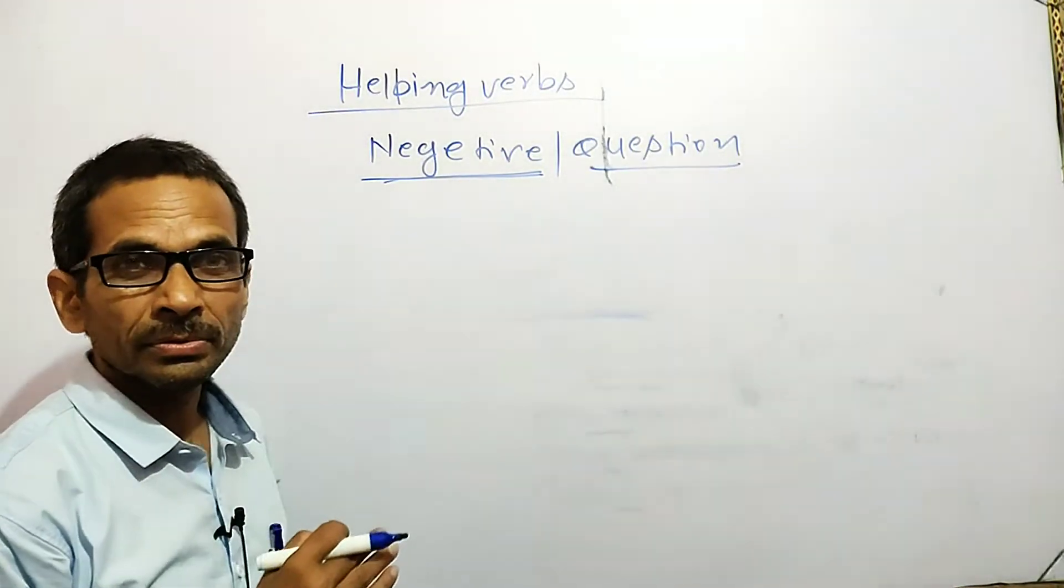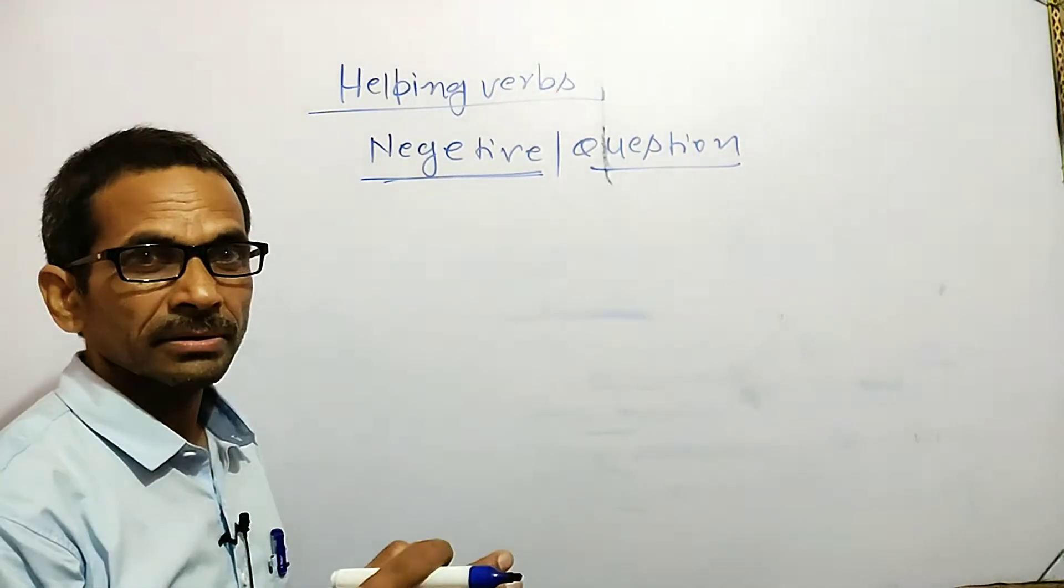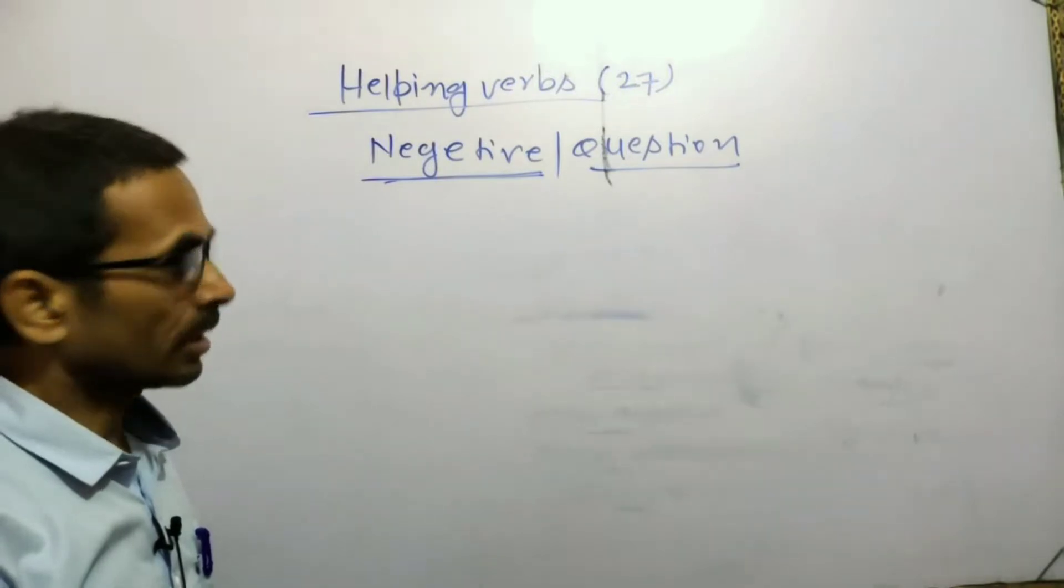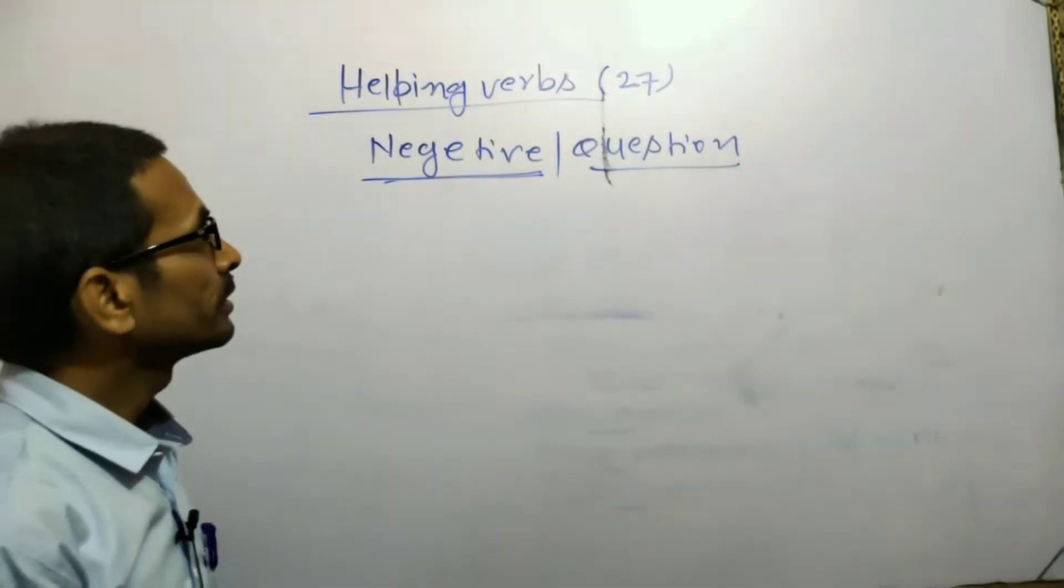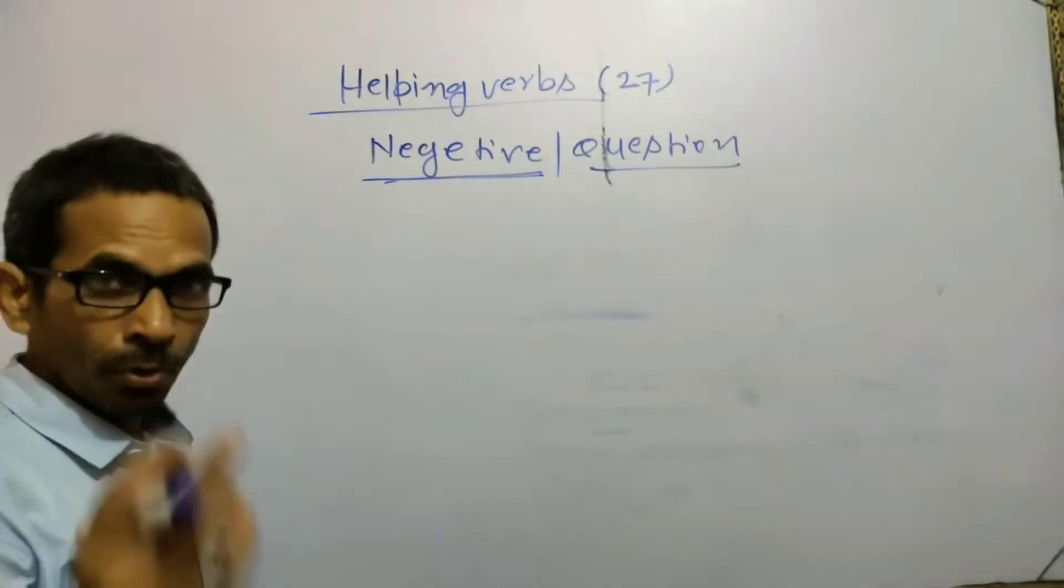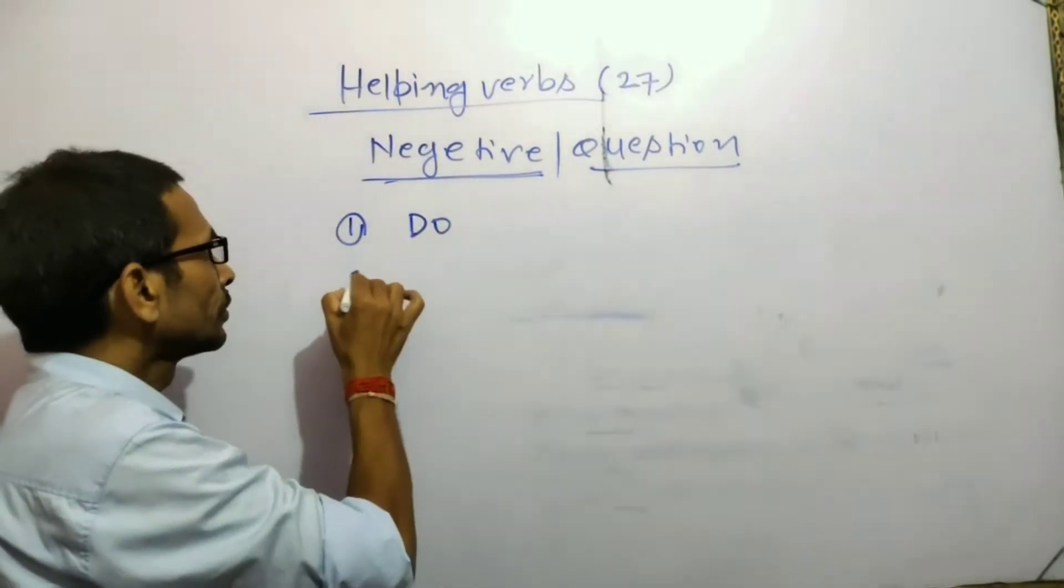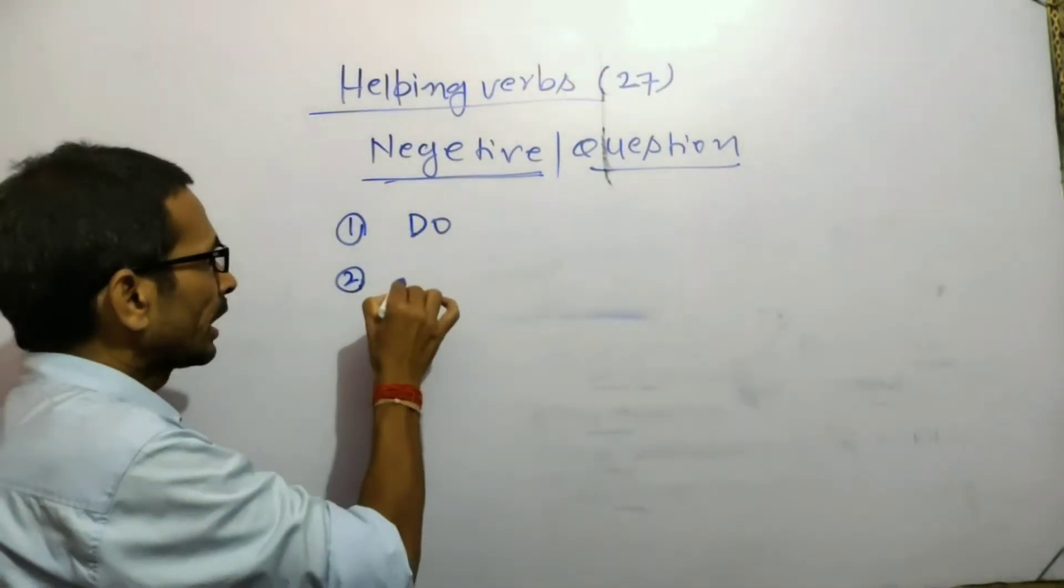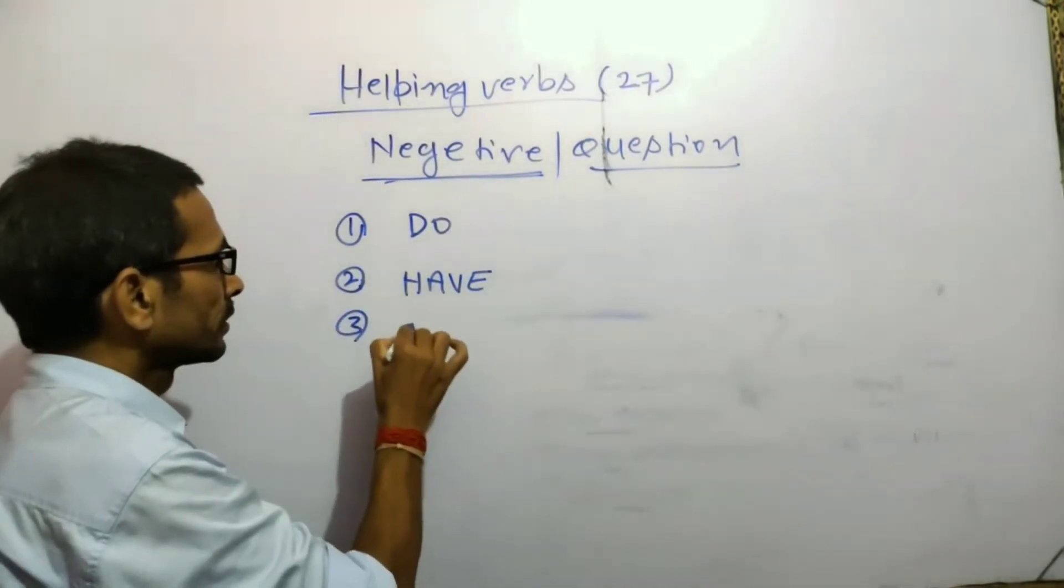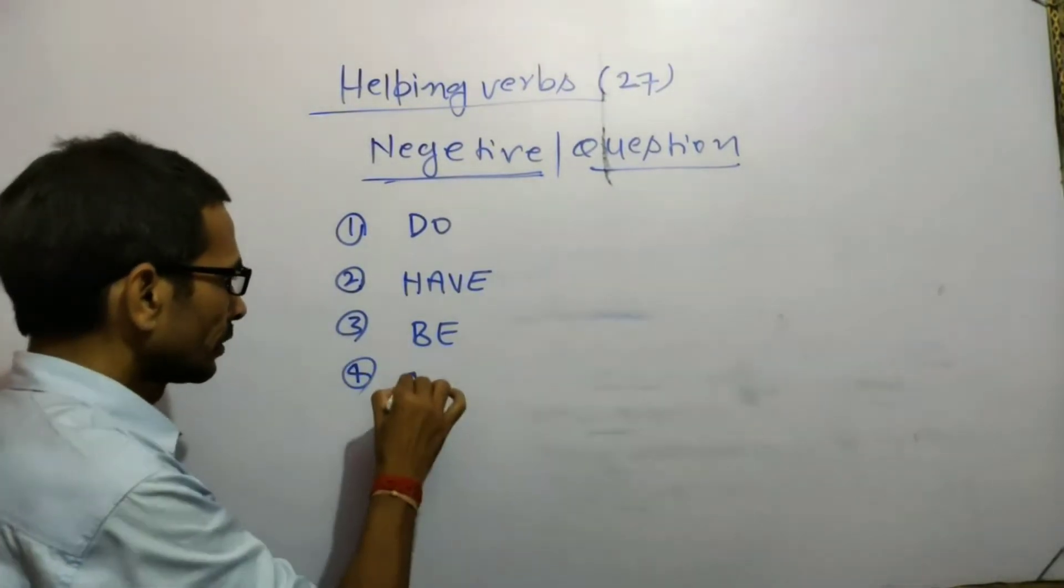The total number of helping verbs are 27. They can be classified into four groups: first DO, second HAVE, third BE, fourth MODALS.